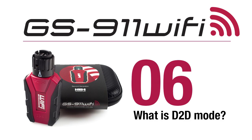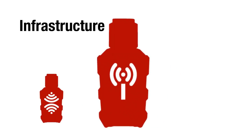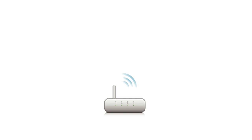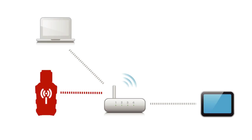To understand D2D mode we start off by looking at Infrastructure mode. The GS911 Wi-Fi was designed to be used in Infrastructure mode. Infrastructure mode is simply where a wireless access point, typically the Wi-Fi router of your home, garage or workshop, provides a wireless Wi-Fi network to which other devices can connect.